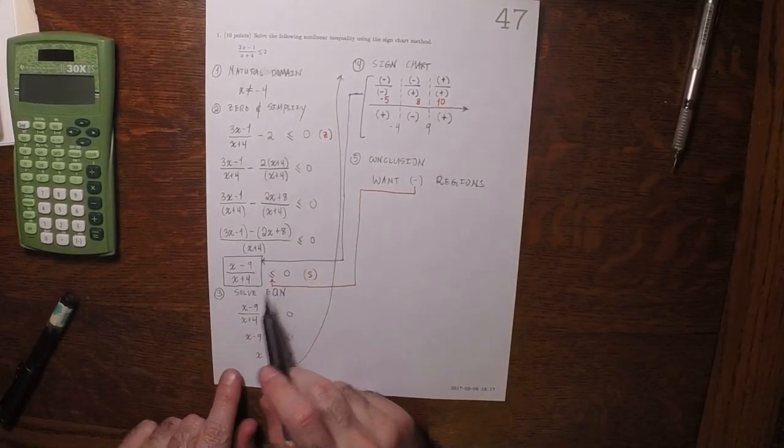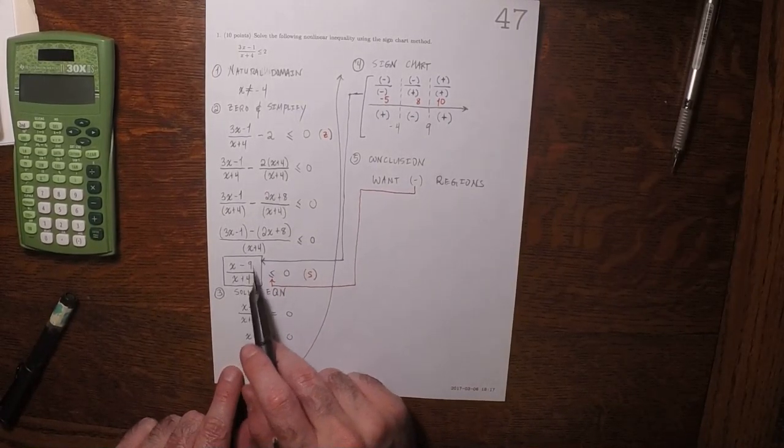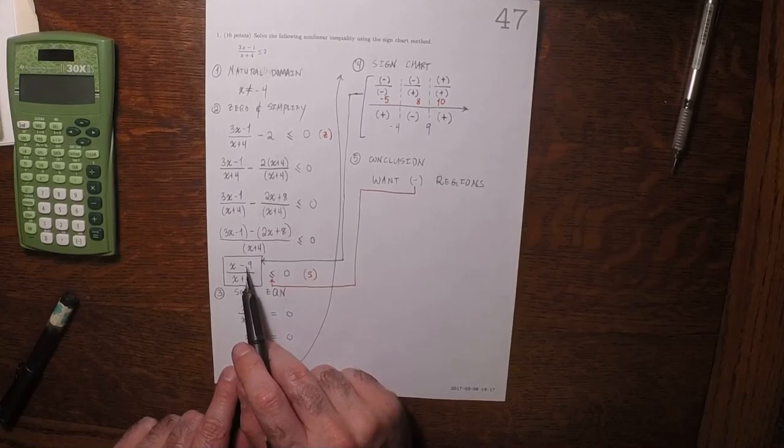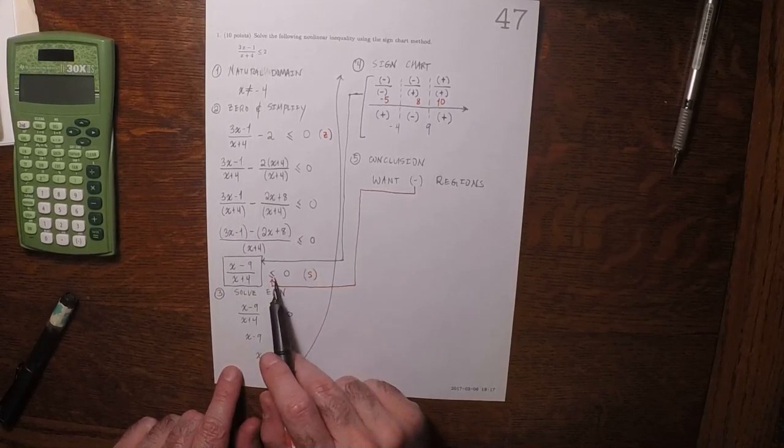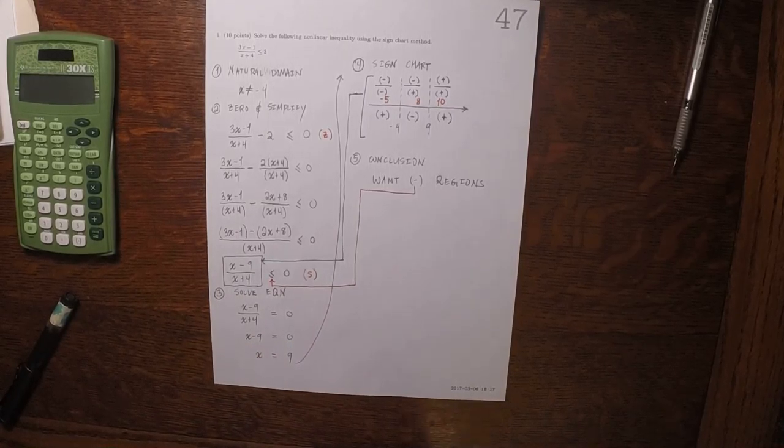The reason why we want the negative regions is because we want this zeroed and simplified expression to be less than or equal to 0. So we want the negative regions.